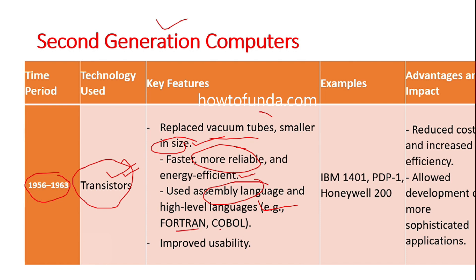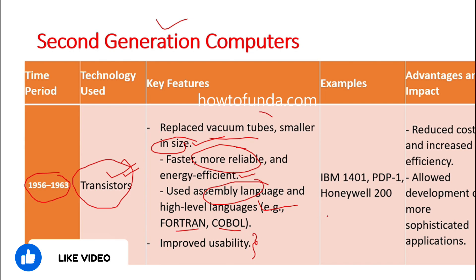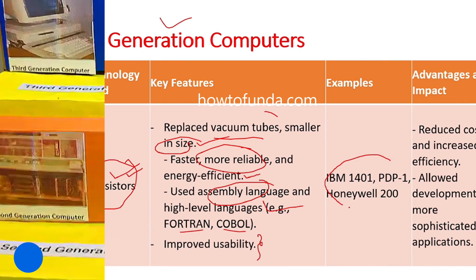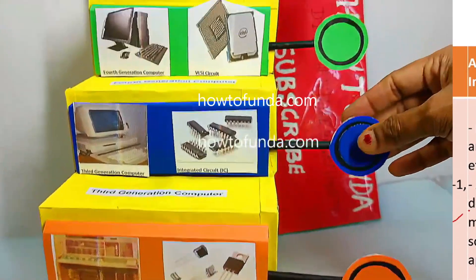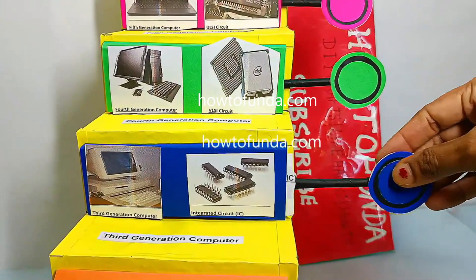Some examples of second generation computers are IBM 1401, PDP-1, and UNIVAC 200.